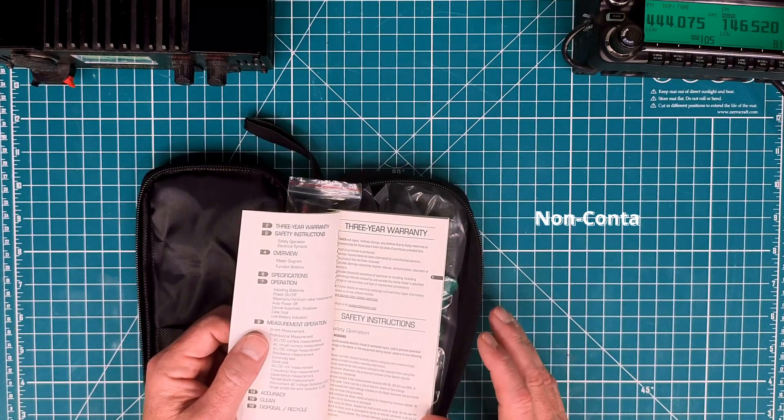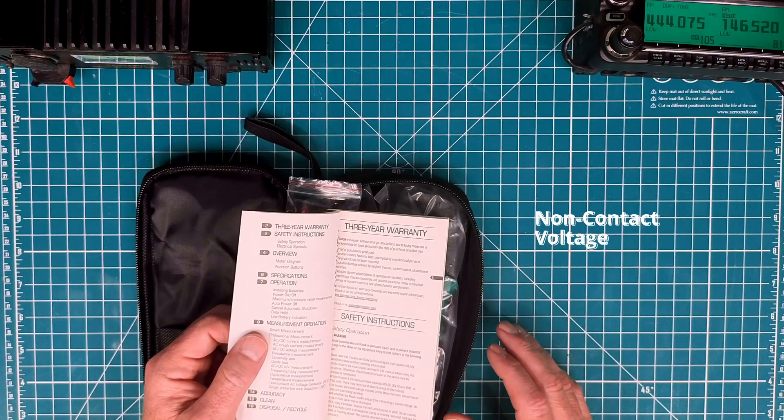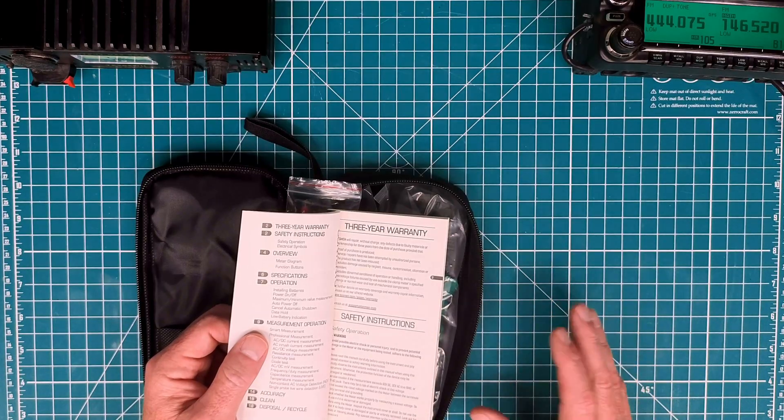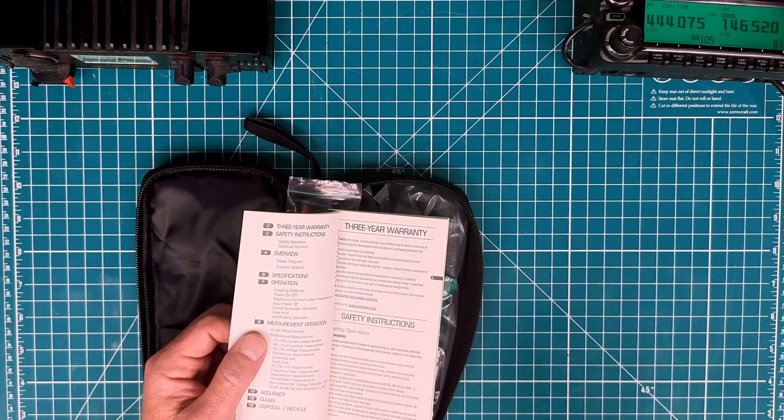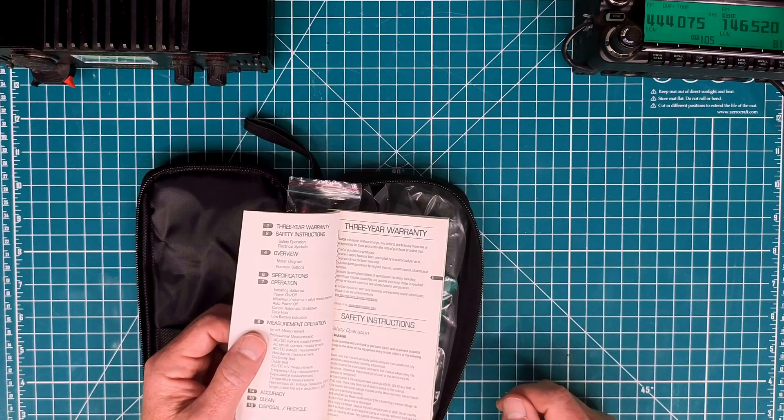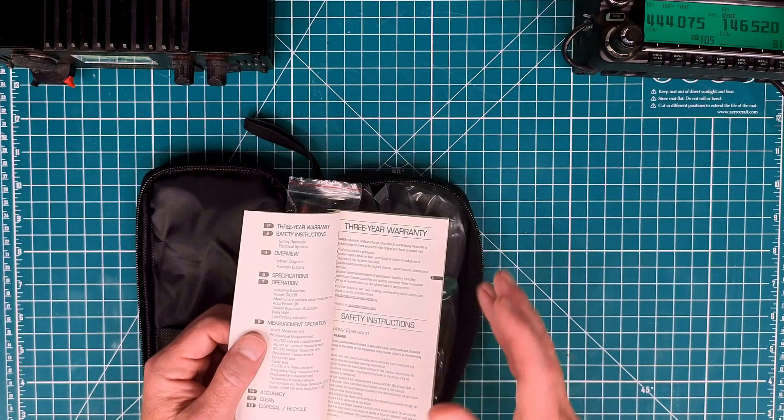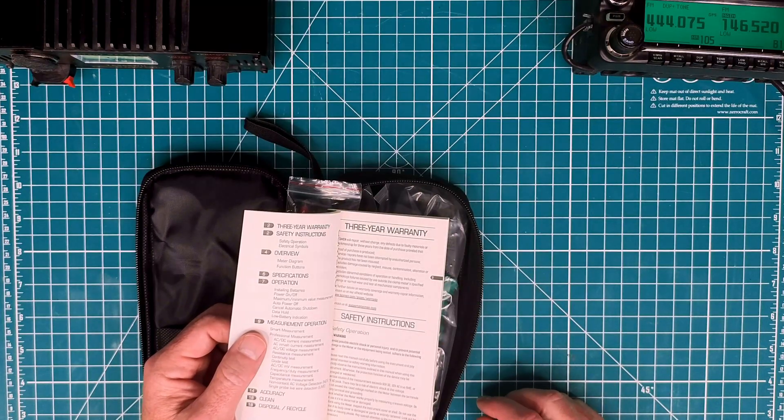This meter also has a non-contact voltage circuit in there. So if you're doing any kind of work replacing receptacles, things like that, instead of having to have a separate non-contact voltage probe, you can actually use the tip of this meter, which is really nice.